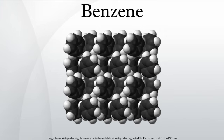Benzene is an excellent ligand in the organometallic chemistry of low valent metals. Important examples include the sandwich and half-sandwich complexes, respectively Cr(C6H6)2 and RuCl2(C6H6)2.